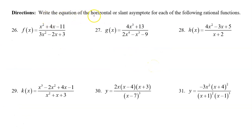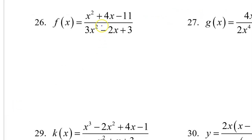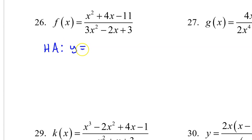Write the equation of the horizontal or slant asymptote for each of the following rational functions. When the degree of the numerator and denominator are equal, there is a horizontal asymptote, and it will be y equals the ratio of the leading coefficients. So that's going to be y equals 1/3.